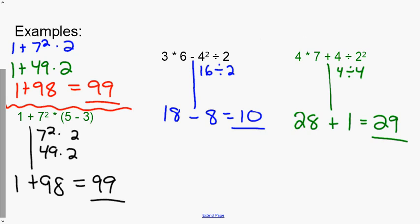On the middle problem, I saw a subtraction sign between the 6 and the 4, so I drew a bar down splitting the problem into two parts. The left part is just 3 times 6, which is 18. The right part: exponent first — 4 squared is 16, then 16 divided by 2 is 8. Going left to right at the bottom: 18 minus 8 equals 10. Similarly, the last problem splits at the plus: 4 times 7 is 28, and 4 divided by 2 squared — exponent first gives 4 divided by 4 equals 1 — so 28 plus 1 is 29.